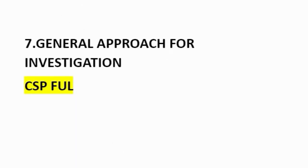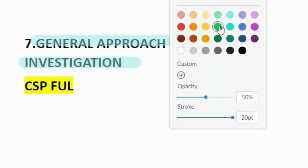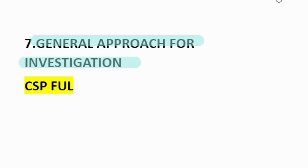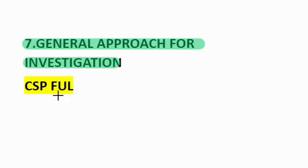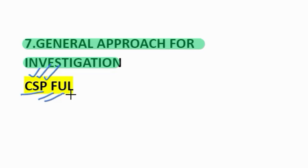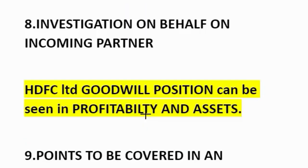General approach for investigation. Some mnemonics are easy to remember and few take time, so we need to repeat them five to ten times. CSP FULL: C for clarity of terms of reference, S for scope of investigation, P for period of investigation. CSP done. Now FULL: F for framing of programs, U for using the work of experts, L for legal requirements, L for investigation report.